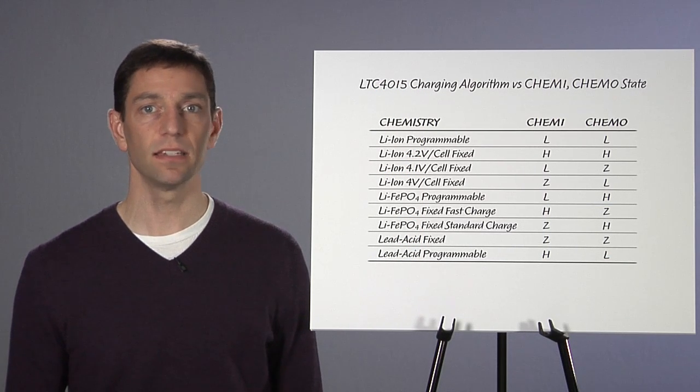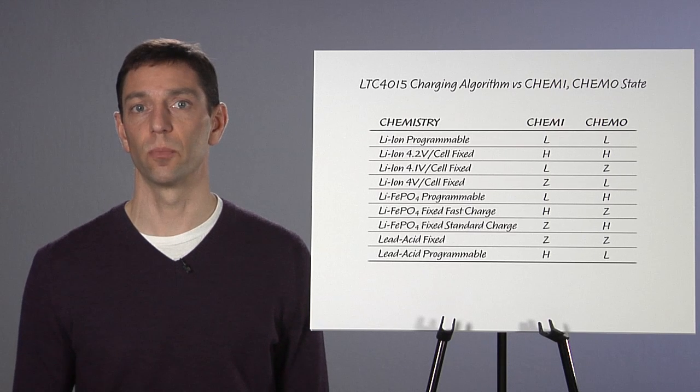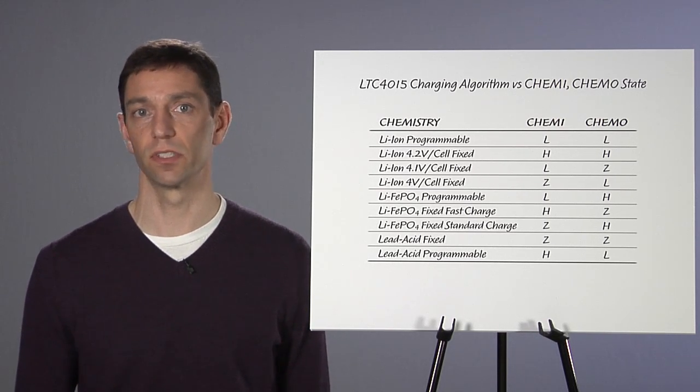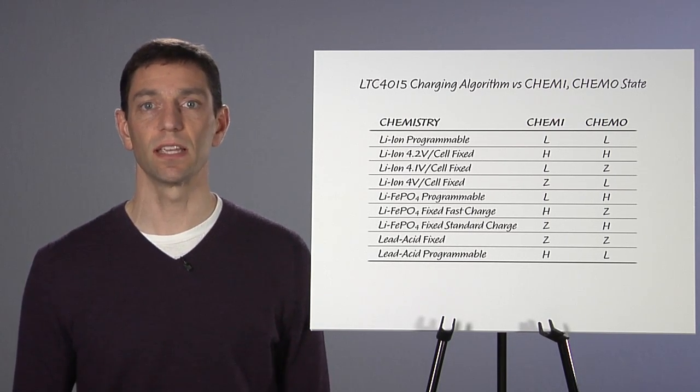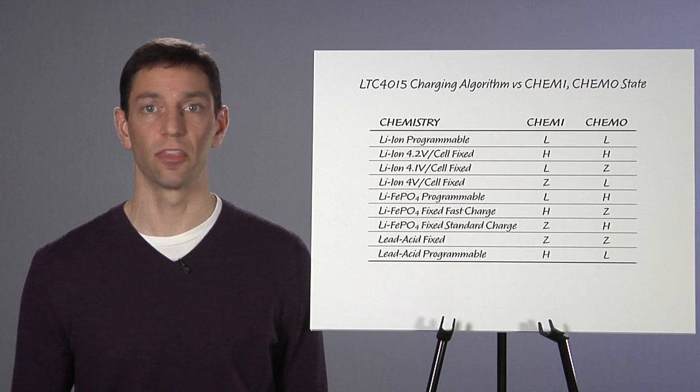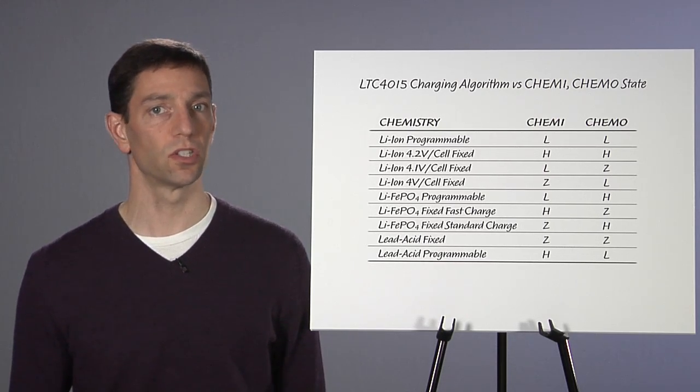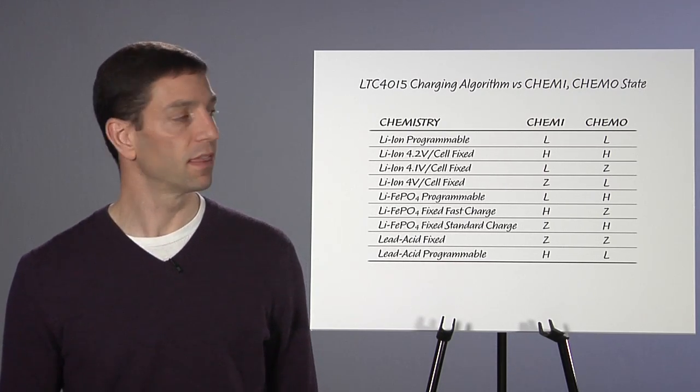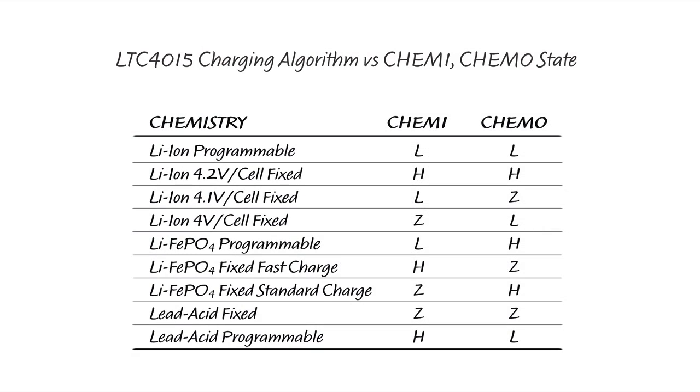As mentioned, nine different charge algorithms are included for battery voltages up to 35 volts. Six different tri-state inputs, two CHEM pins, and three CELLS pins, are used to choose the proper settings. This slide shows how to program CHEM1 and CHEM0. Each of the three chemistries has at least one fixed, non-programmable algorithm, as well as one programmable algorithm.